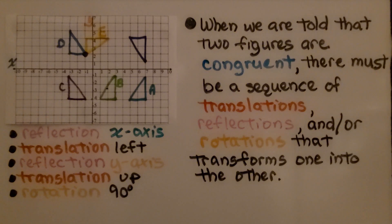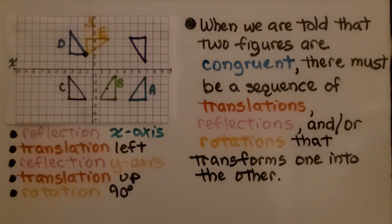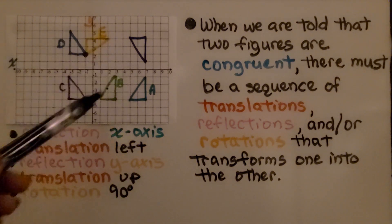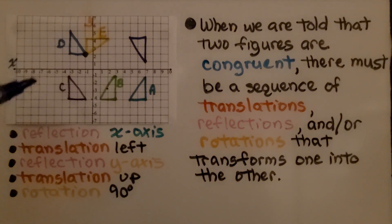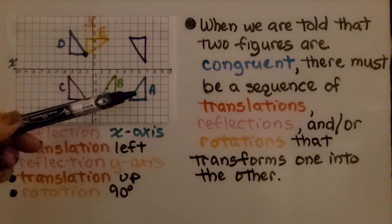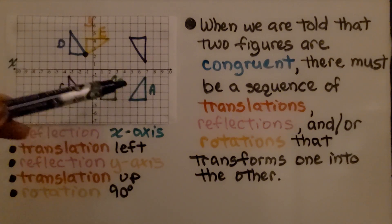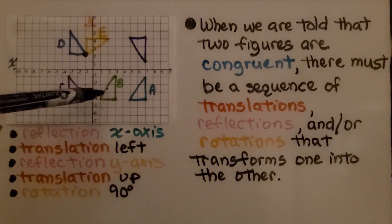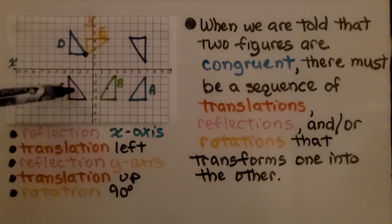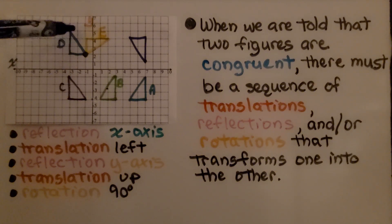When we are told that two figures are congruent, there must be a sequence of translations, reflections, and/or rotations that transforms one into the other. Here we have some transformations from a previous video. We started here and did a reflection across the x-axis, then translated to the left, then reflected across the y-axis, translated up, and then had a rotation of 90 degrees.